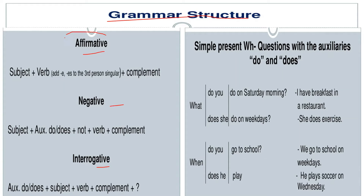First of all we will understand about affirmative. So in the affirmative sentence you will find subject first, then a verb, and then a complement. Complement means an object. So if I am writing a sentence here like 'she plays cricket.'